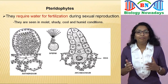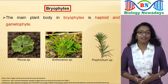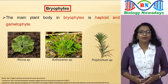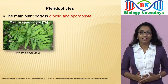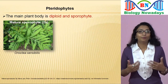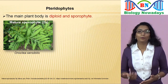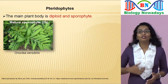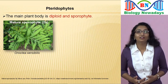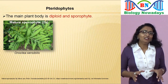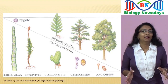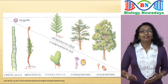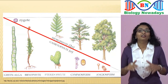You may remember that the main plant body in bryophytes is haploid and gametophytic, which produces gametes. But in the case of pteridophytes, the main plant body is diploid and sporophytic, which produces spores. In other words, the diploid sporophytic phase is the dominant phase in the life cycle of pteridophytes. During the course of evolution, the diploid sporophytic phase became dominant whereas the haploid gametophytic phase got reduced.